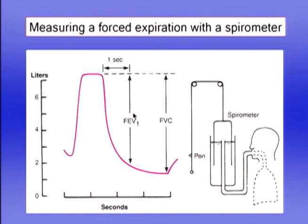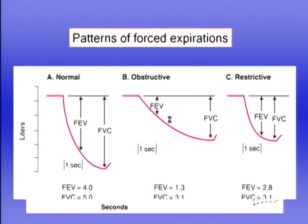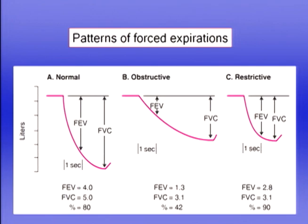Sometimes we measure the vital capacity with a slow expiration, which tends to be somewhat larger — that's why the convention is to call this the fast vital capacity or FVC. Looking at the normal pattern, in this example the patient exhaled five liters altogether and four liters in the first second, giving an FEV1/FVC ratio of 80%. There's some variation depending on stature, age, and gender, but the percentage is normally about 80% in young normal subjects.